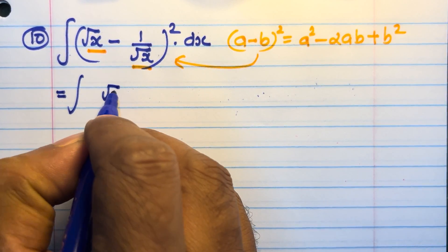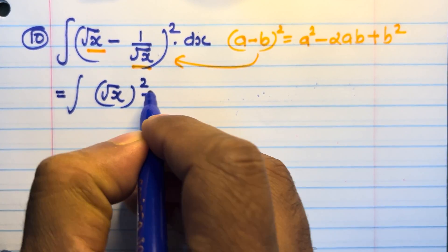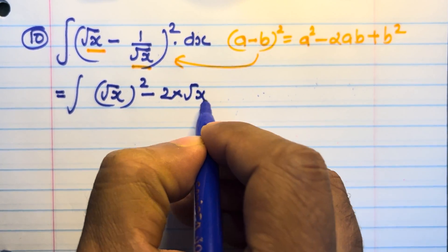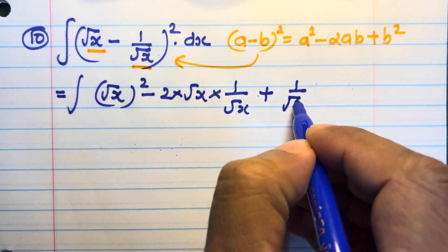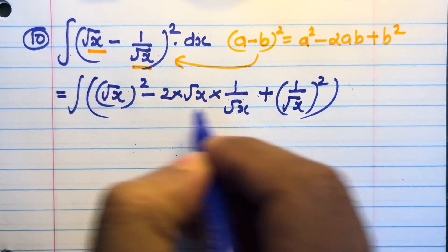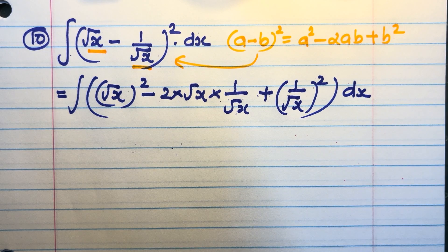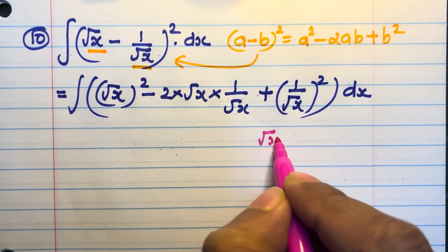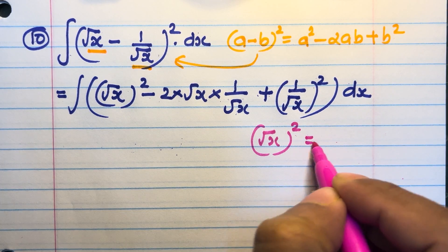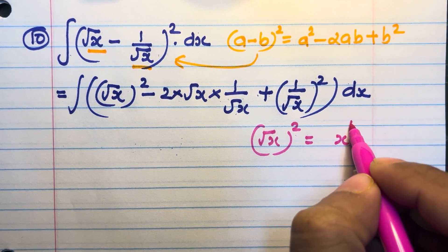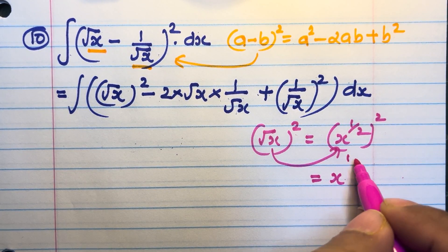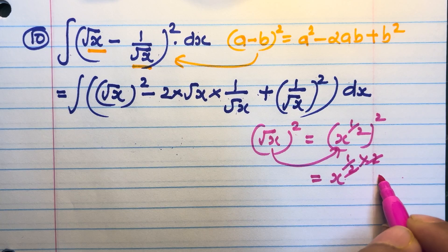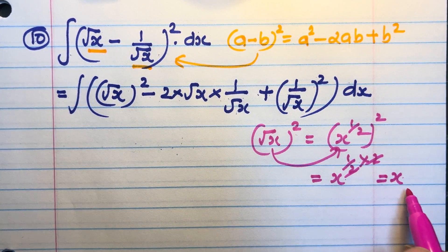Expanding: integral of (√x)² − 2·√x·(1/√x) + (1/√x)² dx. Now, what is the value of (√x)²? Root x means x raised to 1/2, so (x^(1/2))² = x^(1/2 × 2). The 2s cancel, giving (√x)² = x.